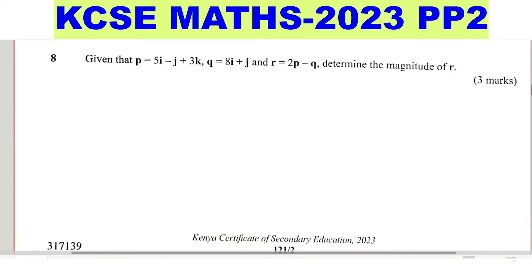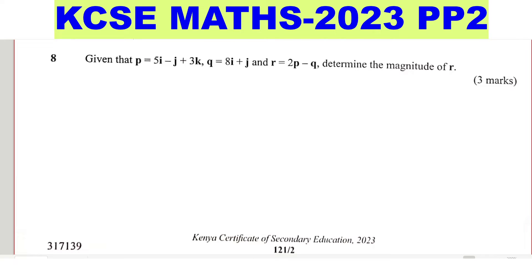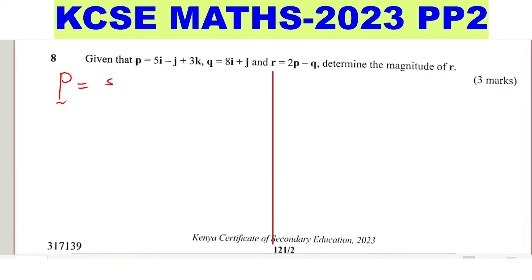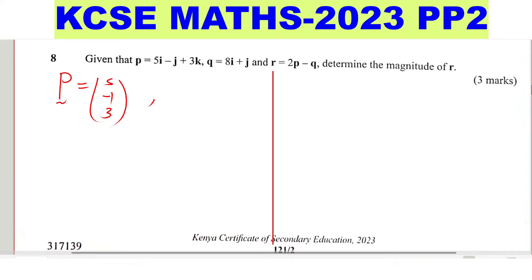To start with, we shall write vector p in the form of a column vector. So p is given by extracting the coefficients of i, j, and k: 5i gives 5, negative j gives negative 1, plus 3k gives 3. And for q the same way: 8i gives 8, plus 1j gives 1, and there is no k term, so k is 0.